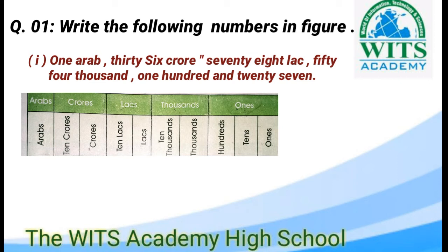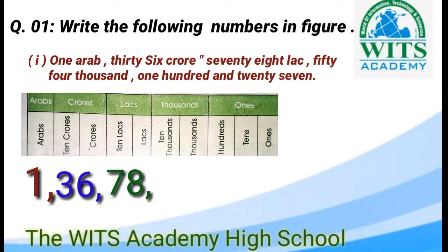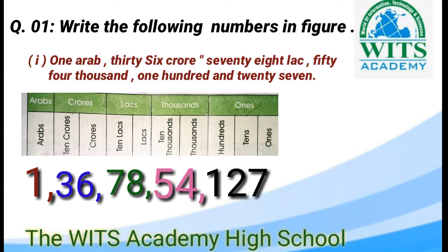ہمارے پاس ہے one arab، تو one کو arab کے portion میں write کریں گے۔ 36 کروڑ — 36 کو کروڑ کے portion میں write کیا ہے۔ 78 لاکھ — یہ لاکھ ہے تو اس کو لاکھ کے portion میں write کرتے ہیں۔ 54,000 — 1000 کے portion میں write کیا ہے۔ اب یہ ہمارے پاس 127 ہے — اس کو ہم نے ones کے portion میں لکھا ہے، کیونکہ ones میں 3 digit کا portion ہوتا ہے اور یہ 3 digit value ہے۔